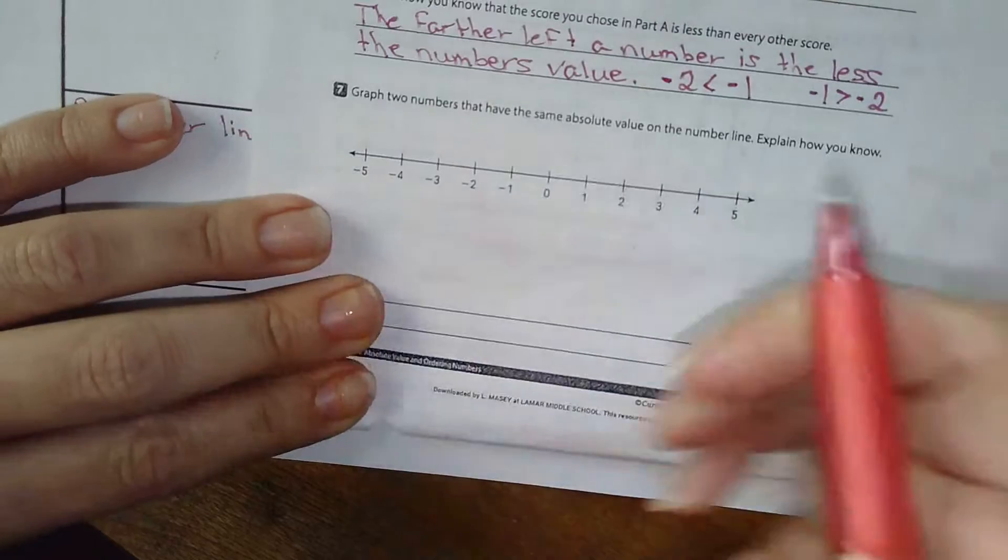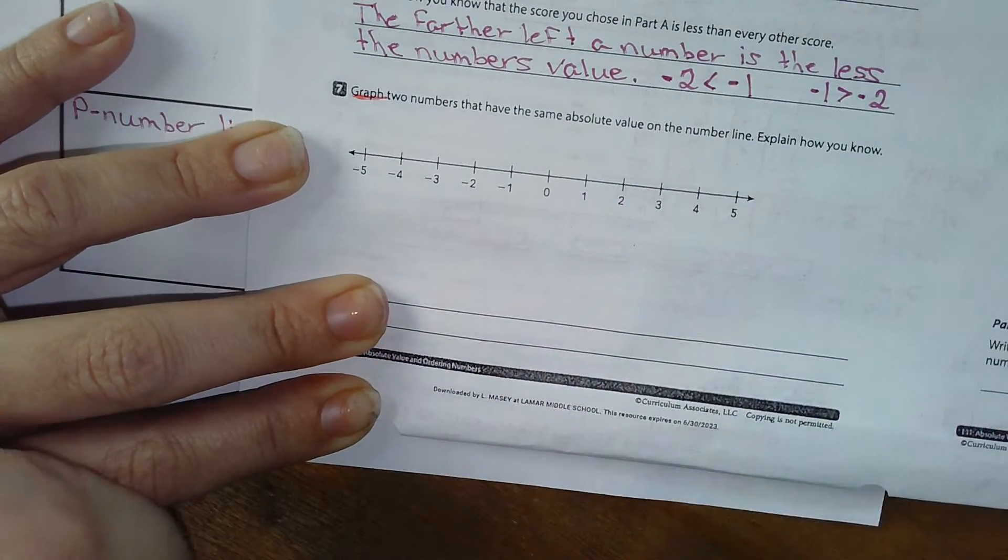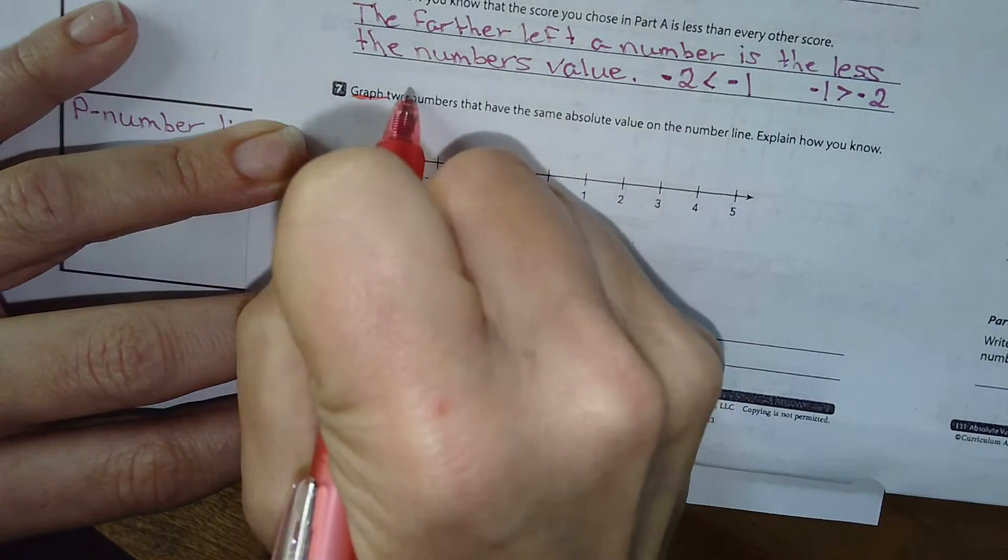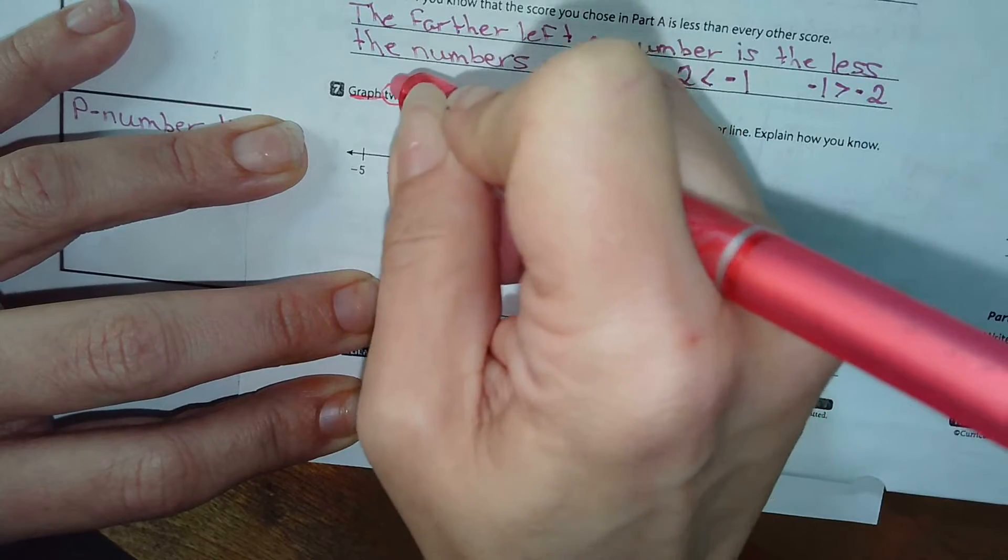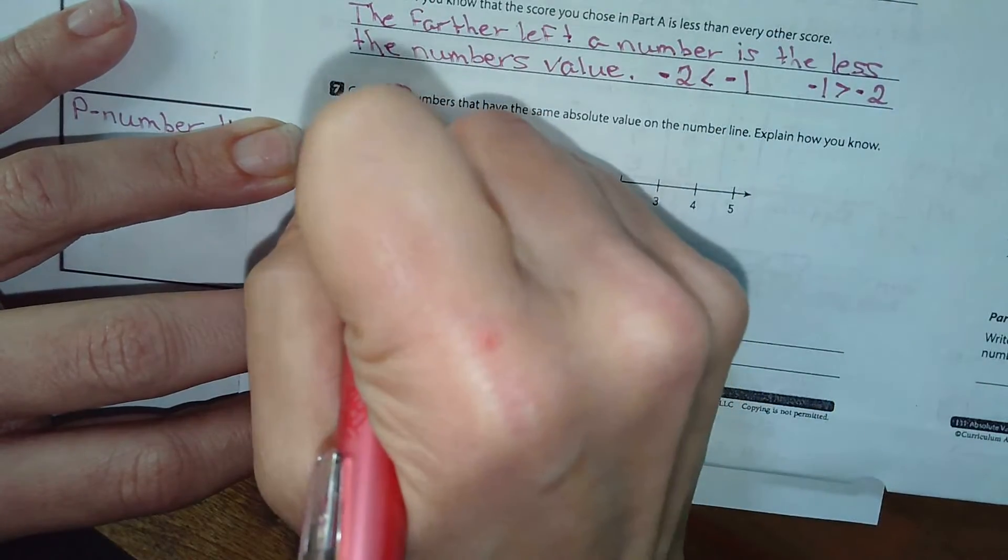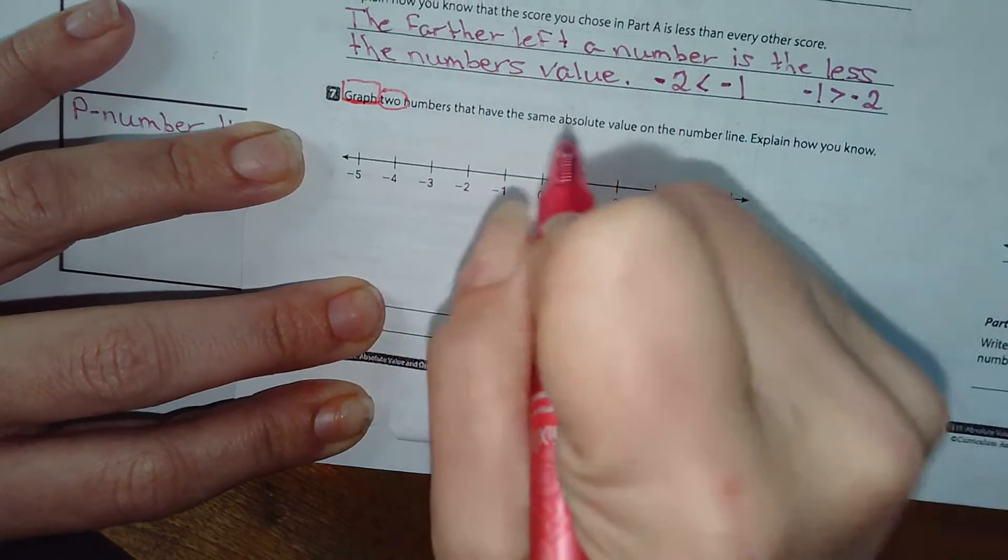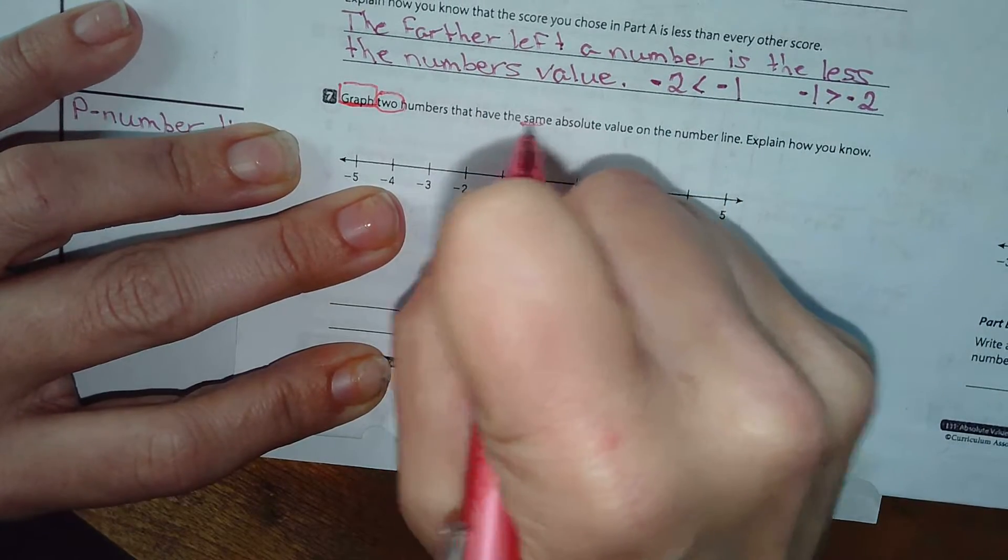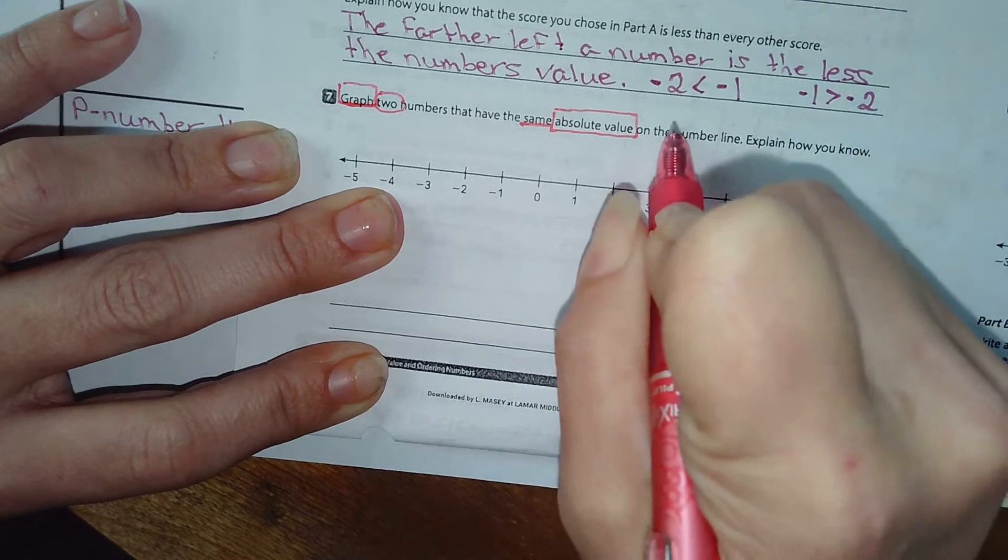I'm going to write graphs, so that means I've got to plot them on my number line. I need to do two numbers, right? I guess I could block that. Well, no. I need to block this.